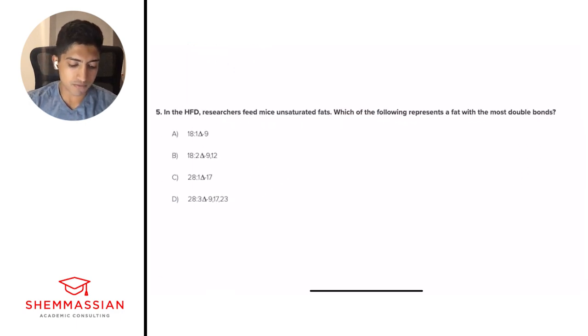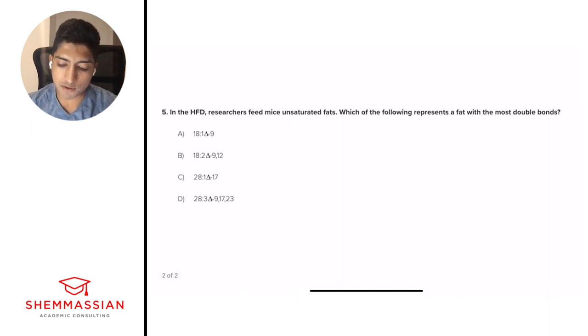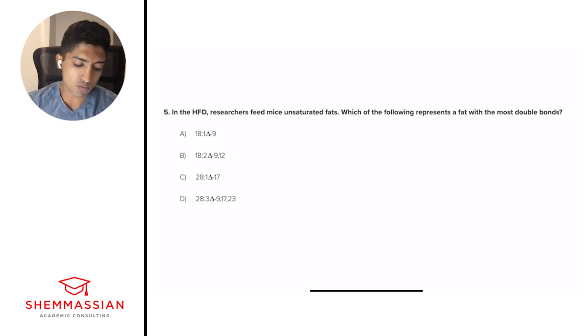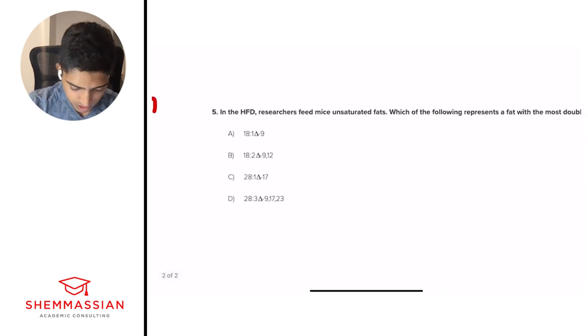Question number five. In the high fat diet, researchers feed mice unsaturated fats. Which of the following represents a fat with the most double bonds? Is it A, 18:1 delta 9? B, 18:2 delta 9, 12? C, 28:1 delta 17? D, 28:3 delta 9, 17, 23? So this idea is important. It's the naming, classification type of thing of hydrocarbons. And so how do we label them? So we have three numbers. We have our first number, our second number, a delta, and our third number. So this is an important idea of our first number represents what? The number of carbons. So in these 18 and 28 cases, it represents 18 carbons or 28 carbons in this carbon chain. What does the second number represent? The second number represents the number of double bonds.